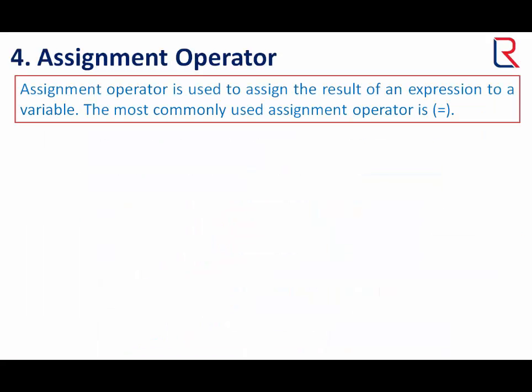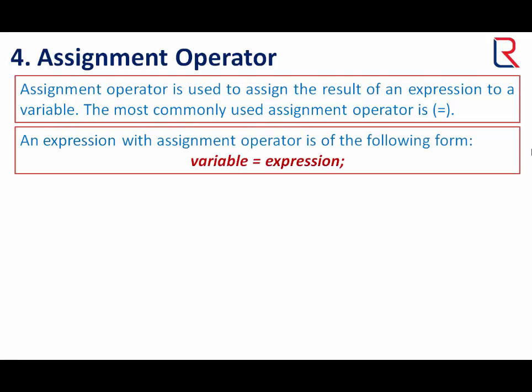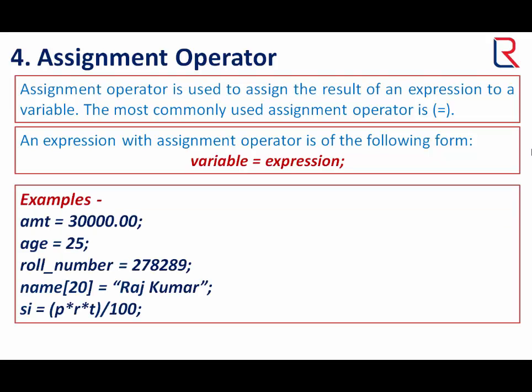Now let's see the assignment operator. The assignment operator is used to assign the result of an expression to a variable. The most commonly used assignment operator is the equal sign. An expression with an assignment operator is of the following form: variable, equal sign, and expression. Here are some examples of the assignment operator.